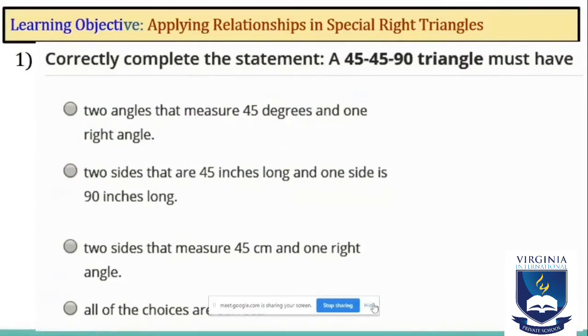Question 1: Correctly complete the statement. A 45-45-90 triangle must have: two angles that measure 45 degrees and one right angle; two sides that are 45 inches long and one side is 90 inches long; two sides that measure 45 centimeters and one right angle; or all of the choices are correct. The correct answer is the first one: two angles that measure 45 degrees and one right angle.